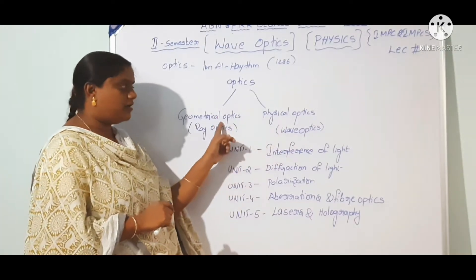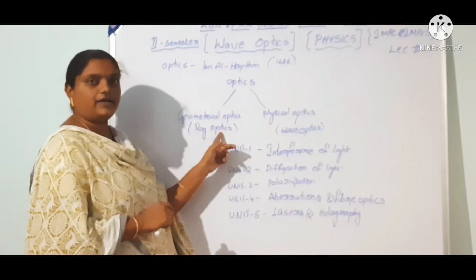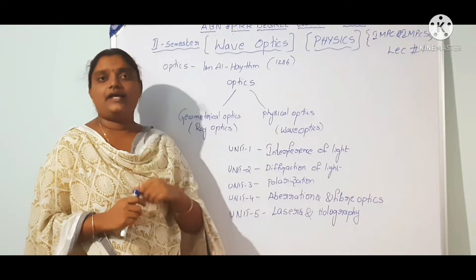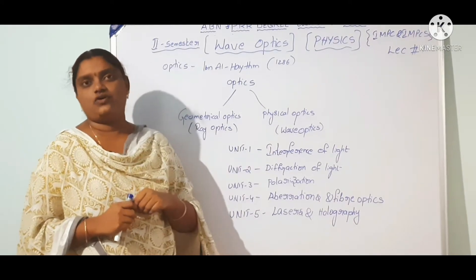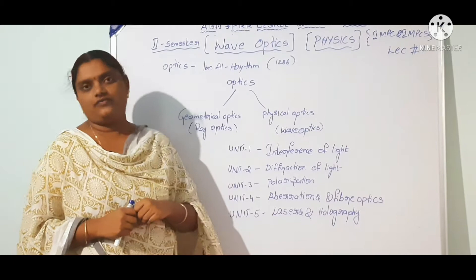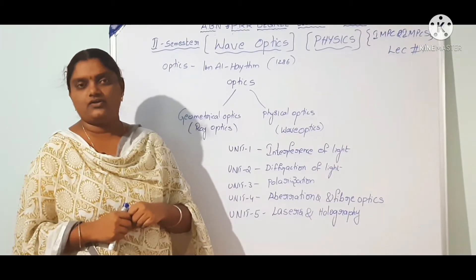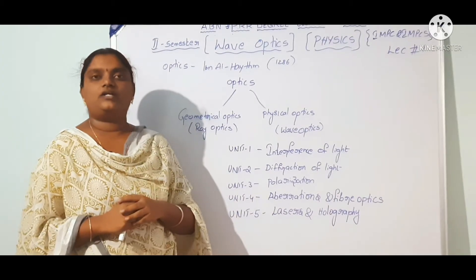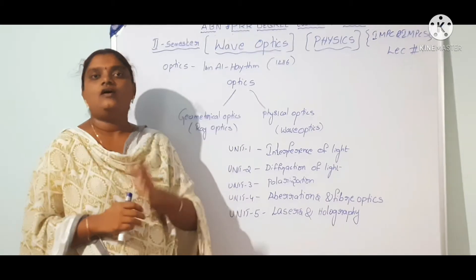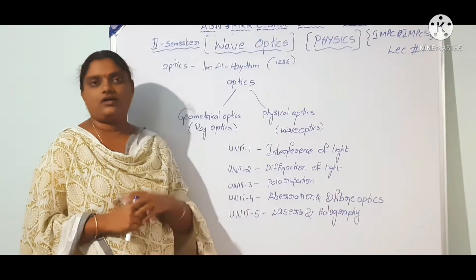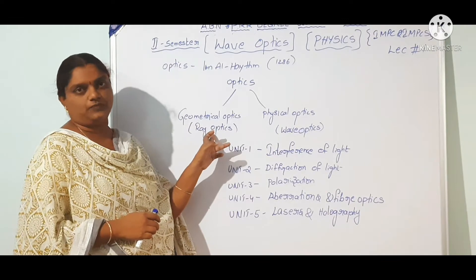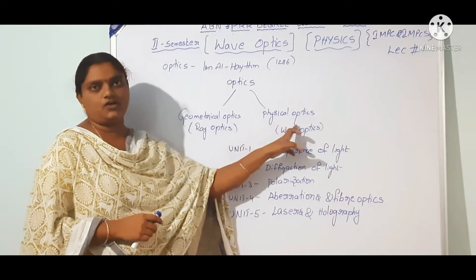Geometrical optics is also called ray optics. Here, we consider light in the form of rays, traveling in a straight line. If light is not bent, we represent the nature of light using ray optics.